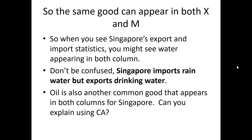Oil is another common good that appears in both import and export columns — can you explain it using comparative advantage? That's the end of today's lesson. I hope you now better understand how to link factor endowment to explain why countries have different comparative advantages. Thank you.